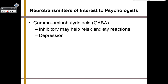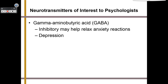Gamma-aminobutyric acid, or GABA, is inhibitory and can help relax anxiety reactions, but is also linked to depression. Endorphins occur naturally within our brain and bloodstream and can inhibit pain. If you've ever been running and gotten that second wind where it stops hurting and you feel refreshed — that is the runner's high. What's happened is you've run enough that your brain has started to release endorphins, so you feel good in that moment.